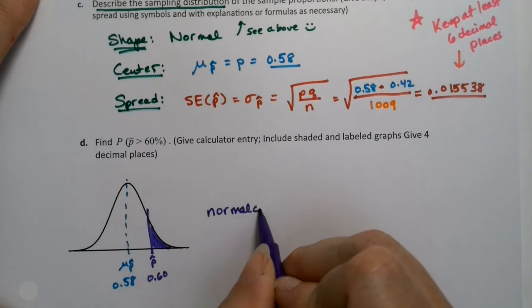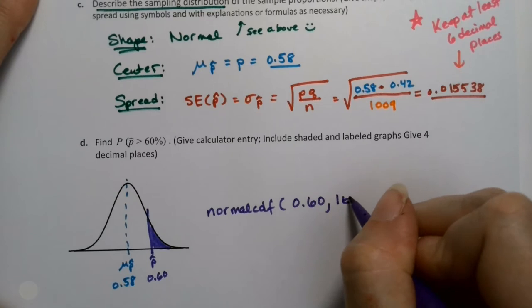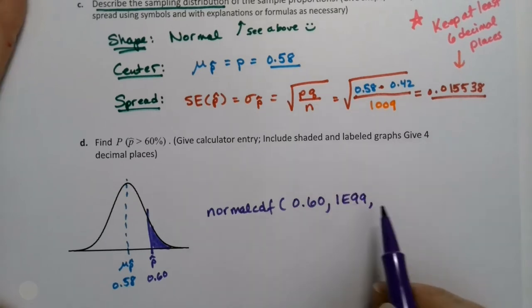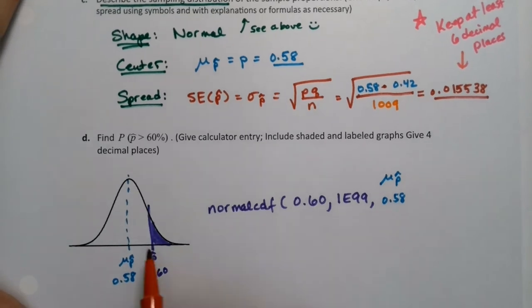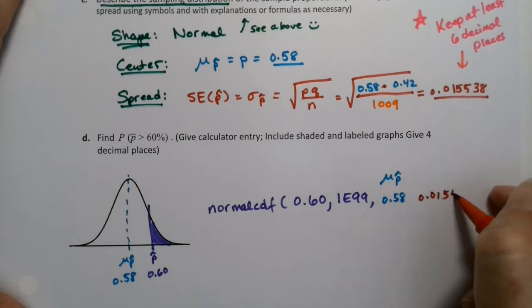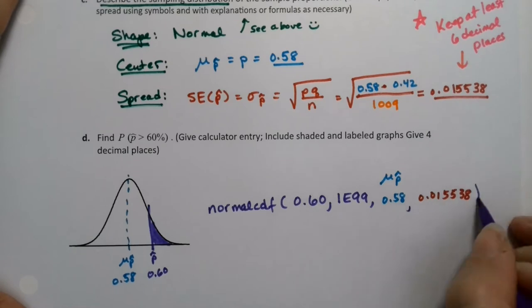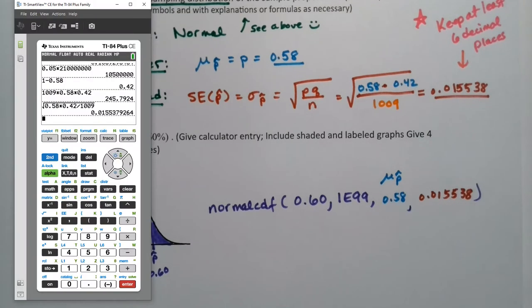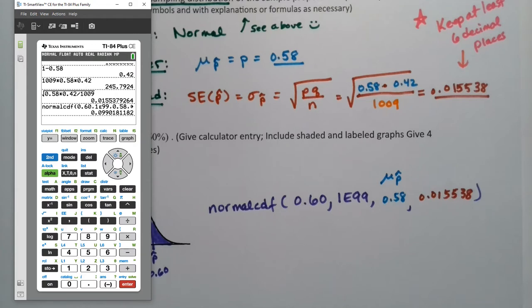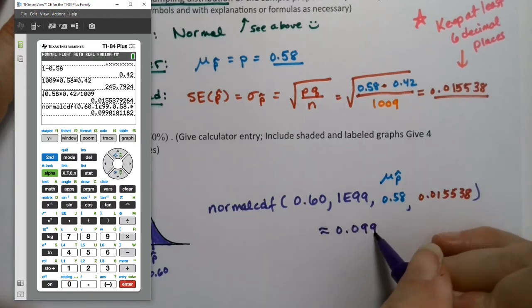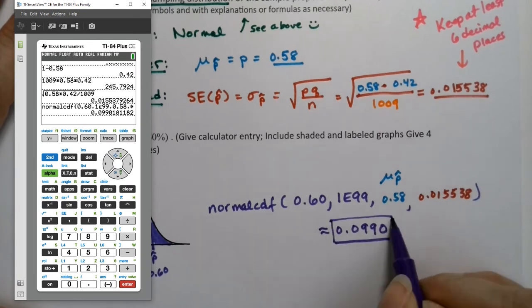I don't know this area. That's the probability that I'm looking for. So I'm going to use normal CDF. And of course, you only have to write this if you're using the calculator. If you're using StatCrunch, you don't really need to bother. So 0.60, 1E99, the center was 0.58. That's the middle of my normal curve. The spread on my normal curve, where the inflection points fall, is 0.015538. Keep those decimal places. It helps. So on the calculator, second distribution, normal CDF, 0.60, 1E, which is above your comma, second comma, 99, 0.58, 0.015538. We'll go to Paste and press Enter. And we get 0.0990.